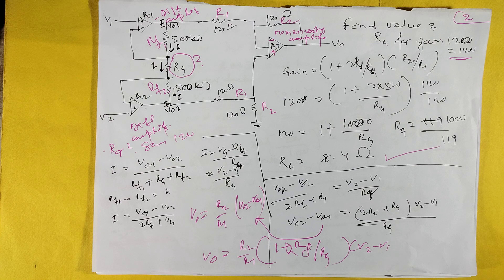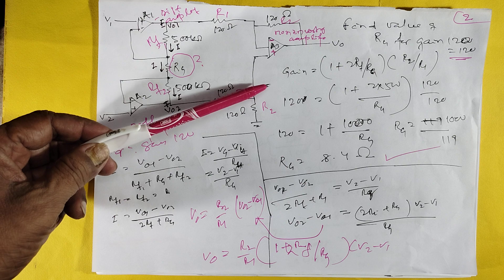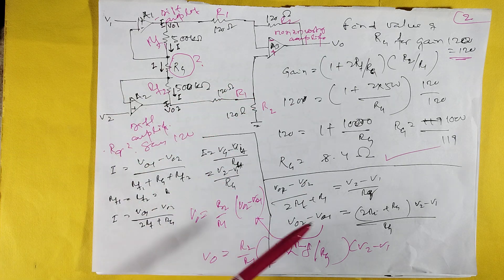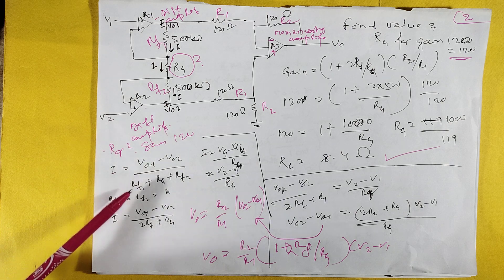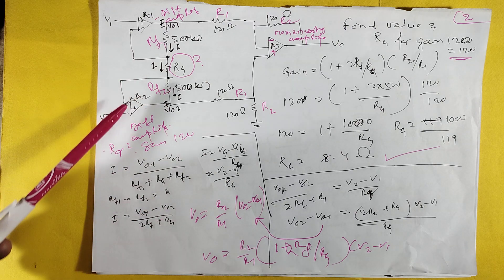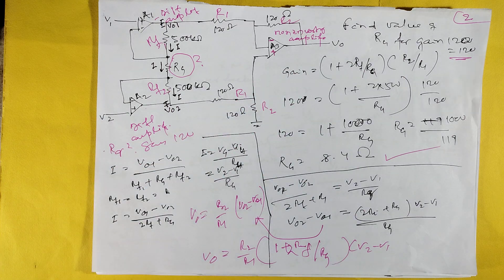You have to find RG for gain 120. There is a gain formula. You put 120, RG will come to 8.4 ohms. How is it coming? I simply explain here. This is the formula. If you know the formula, you can do this.